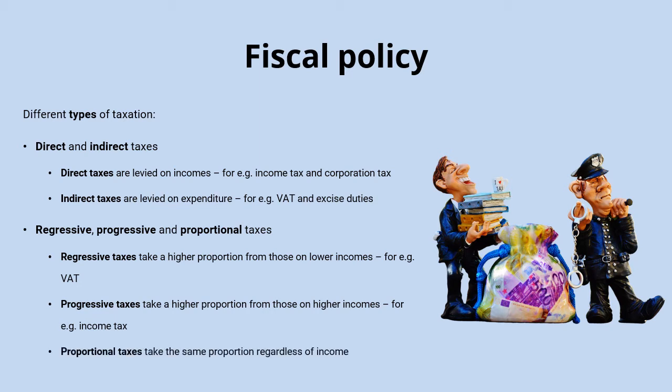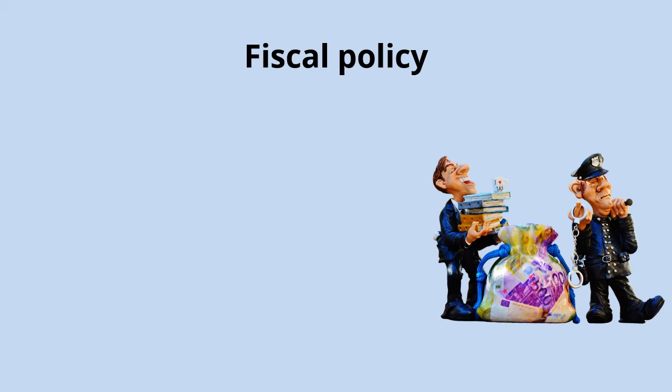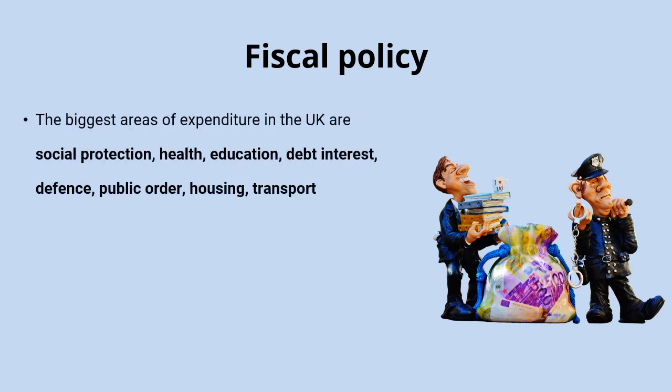Proportional taxes take the same proportion regardless of income — so a flat rate of 20% on all income earned would make it a proportional tax. In terms of how tax revenue is actually spent, there's a huge range. By far the biggest in the UK is social protection, covering spending on pensions and welfare benefits. Then you've got health, education, debt interest payments, military defence, public order and policing, housing, and transport, just to give a few examples of major areas of expenditure.